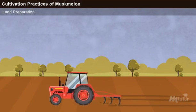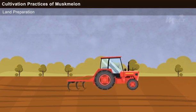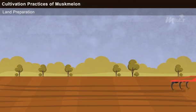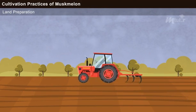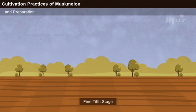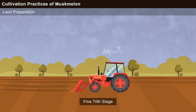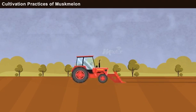Land Preparation. The land should be ploughed thoroughly until it reaches the fine tilth stage. Once the desired stage is attained, the soil is leveled before sowing.